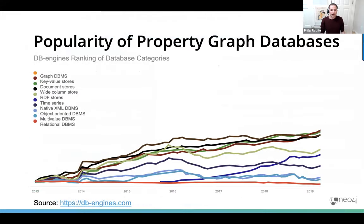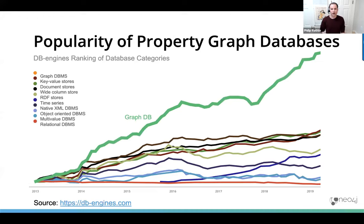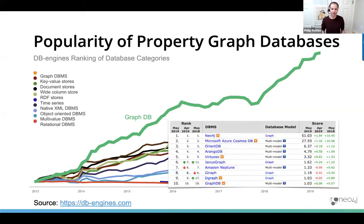I want to talk about the popularity of property graphs. There is a site, dbengines.com, that does number crunching and measures database popularity, refreshing scores every month. If you exclude property graphs, you can see how since 2013 when they started tracking things, the relative growth in different database areas has evolved — and property graphs have been a strong outlier, growing significantly, though from a small base. This technology has really continued to take off and not slow down.